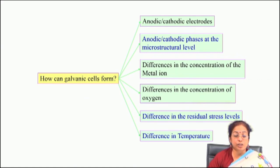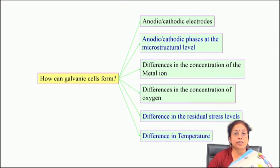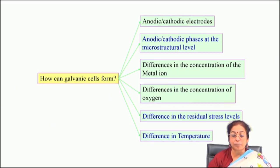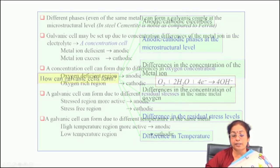For example, in any microstructure, if you have different phases with different corrosion potentials, there will be micro-galvanic cell formation between those phases and the problem starts at the interface. When there is a difference in concentration of metallic ions, a galvanic cell may form. Difference in oxygen concentration can also lead to galvanic cell formation. Difference in residual stress level is another factor — if one part is cold-worked and the other is annealed, the cold-worked site corrodes more. Difference in temperature also creates galvanic cells, where the high temperature regime acts as anode.